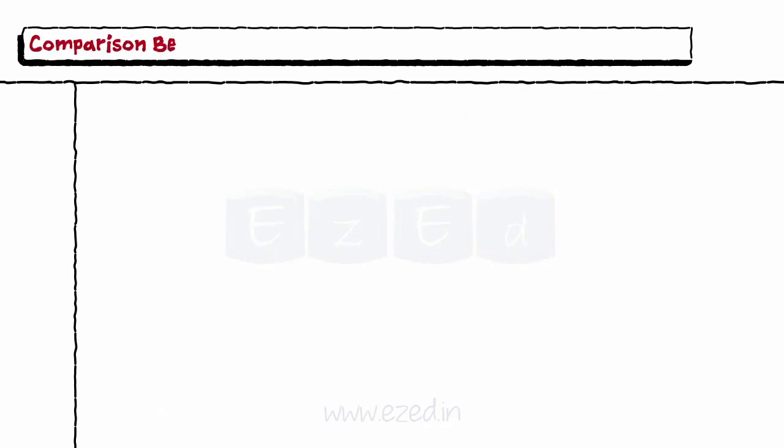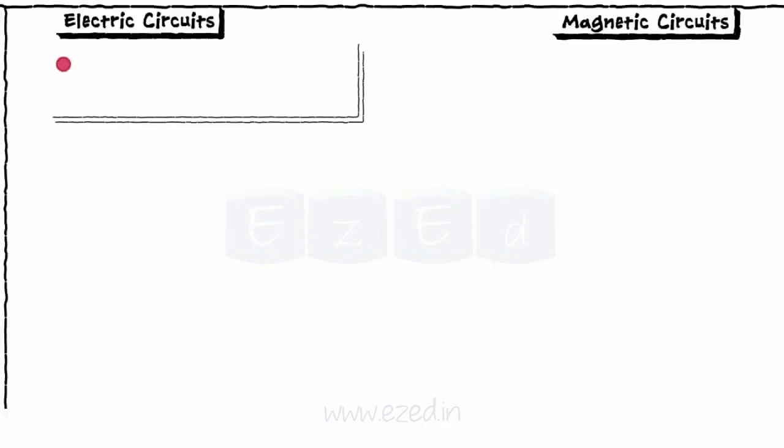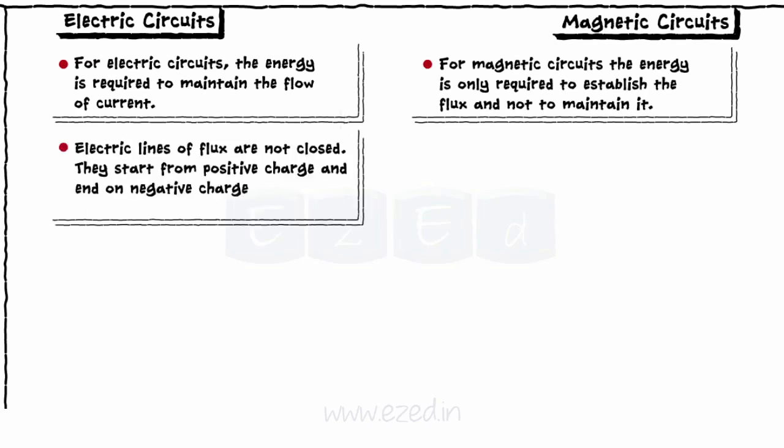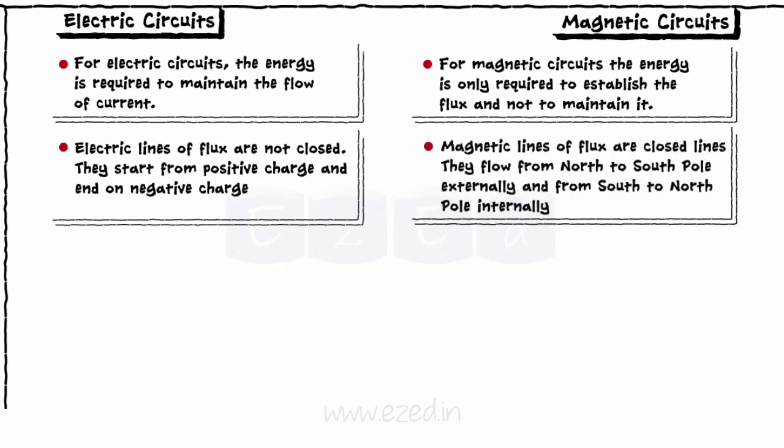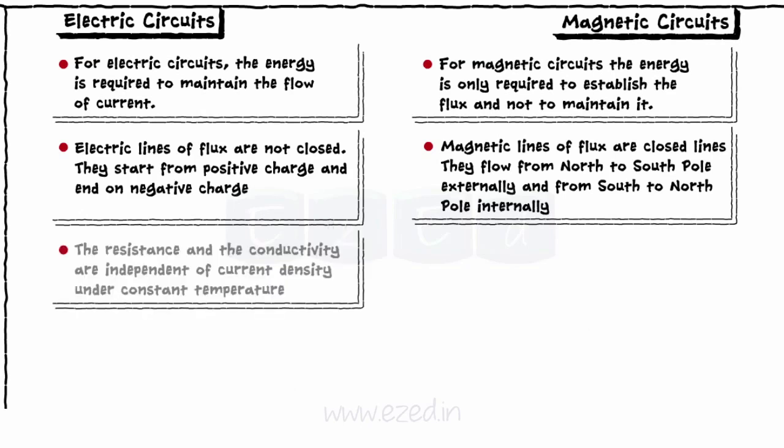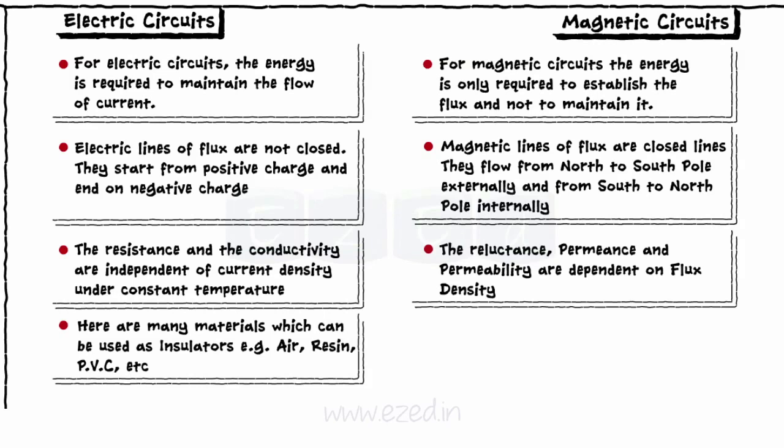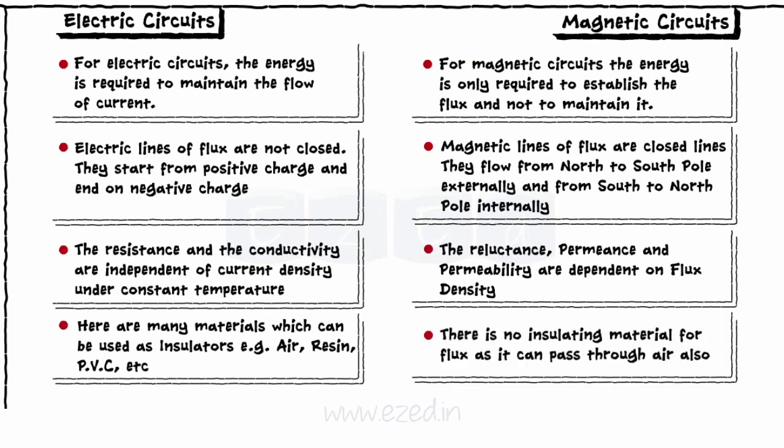Let's see the comparison between electric circuits and magnetic circuits. For electric circuits, energy is required to maintain the flow of current, but for magnetic circuits, energy is only required to establish the flux and not to maintain it. Electric lines of flux are not closed; they start on a positive charge and end on a negative charge. Magnetic lines of forces are closed as they start at north pole and end at north pole again, flowing through the south pole. The resistance and conductivity of electric circuits are independent of current density. The reluctance, permeance, and permeability are dependent on flux density. Many materials like air, resin, PVC can be used as insulators for electric circuits. There is no insulating material for flux as it can pass through air also.